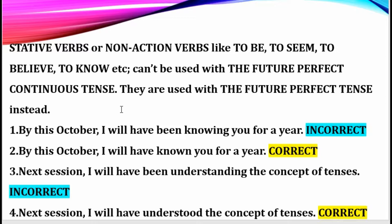Look at the examples. 'By this October, I will have been knowing you for a year.' This is incorrect — it's meaningless. Instead: 'By this October, I will have known you for a year.' This is the correct usage. 'Know' is a verb of perception — a stative verb — it doesn't carry -ing.